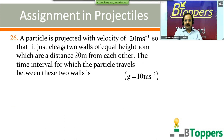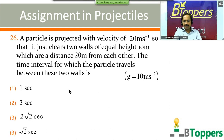Question number 26: a particle is projected with a velocity of 20 m/s so that it just clears two walls of equal height 10 meters which are at a distance of 20 meters from each other, g = 10 m/s². The time interval for which the particle travels between the two walls is — four options are shown on screen. Come on, try the question.